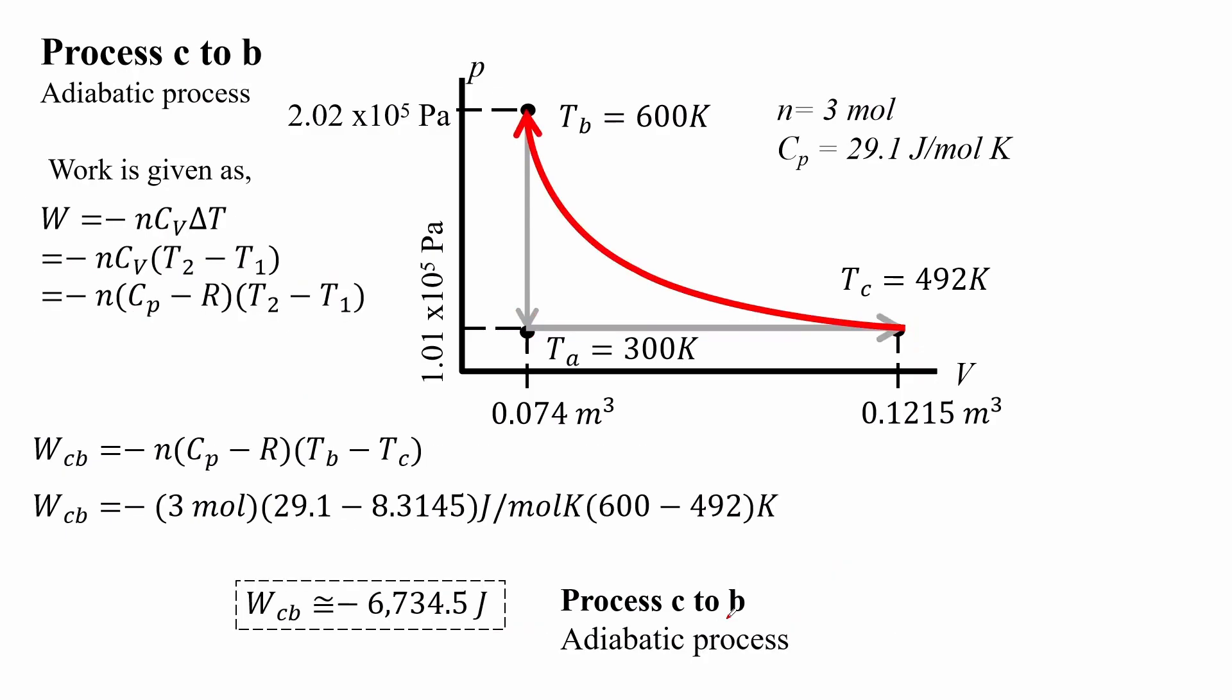The second process for the cycle is an adiabatic process for the C to B path. We see that the work for C to B is about negative 6734 Joule for an adiabatic process.